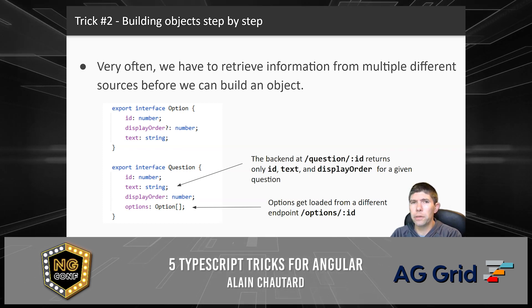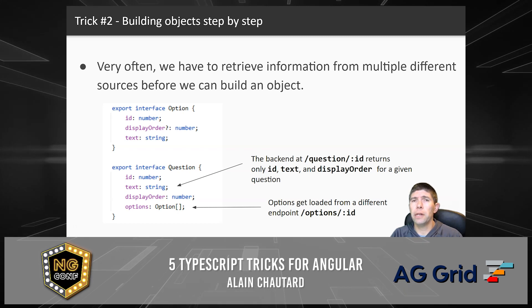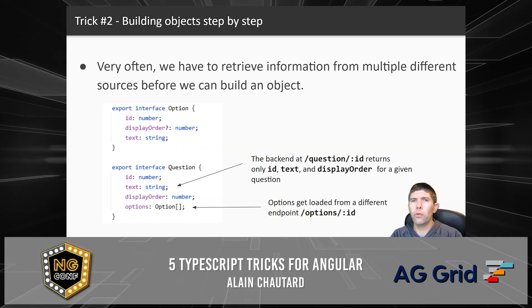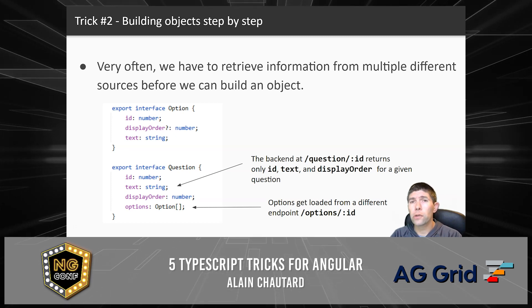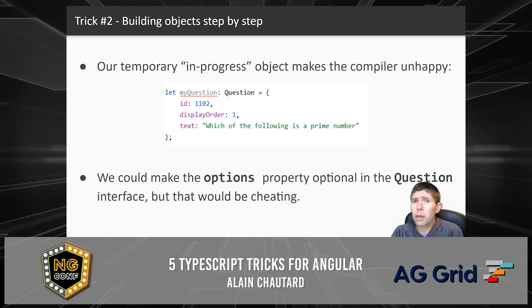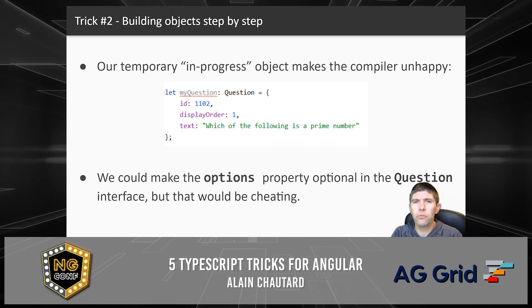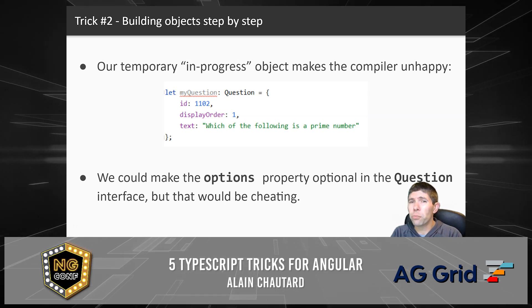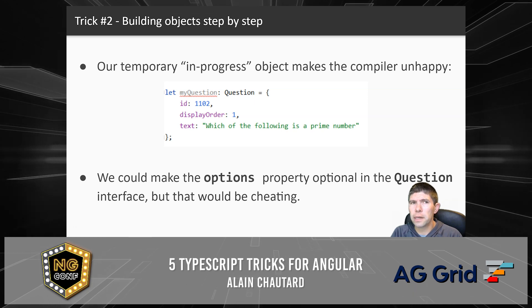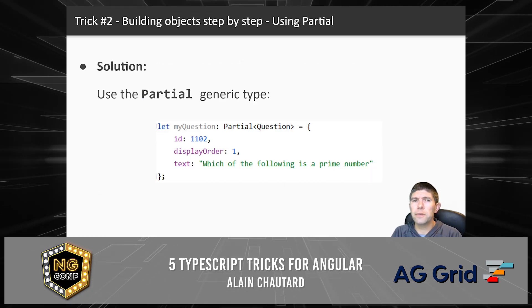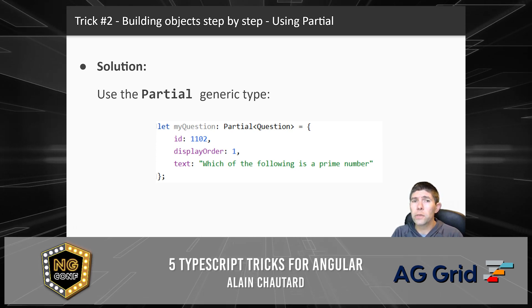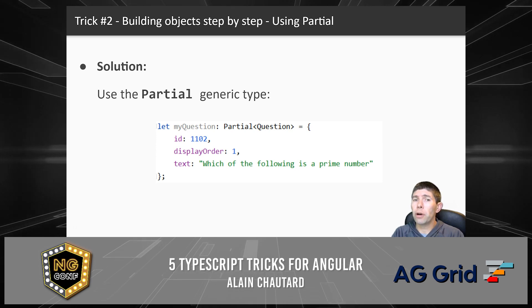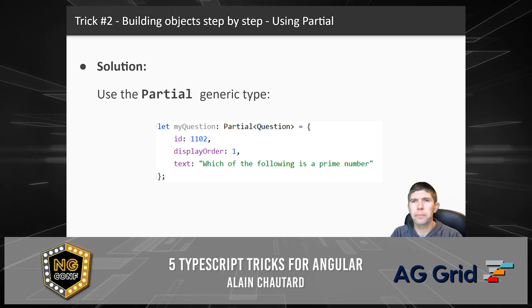Trick number two is for data that we have to retrieve from different endpoints. Sometimes we have to make different HTTP requests to build a specific object. In this example, three properties come from one request and a final property 'options' comes from another HTTP request. The problem is that the TypeScript compiler doesn't like objects that do not have all of the required properties. Instead of making 'options' optional in the interface, TypeScript gives us a generic type called Partial, which allows us to build an object in a temporary state that does not have all of its properties yet — problem solved without changing our interface.